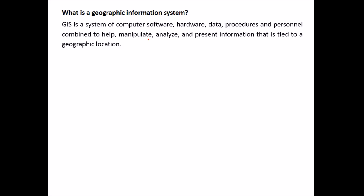GIS is a system of computer hardware, software, data, procedures and personnel combined to help manipulate, analyze and present information that is tied to a geographical location, or you can say to present spatial data and spatial analysis. Whenever you speak about GIS, there has to be spatial data, because otherwise this will get down to any other database management system.